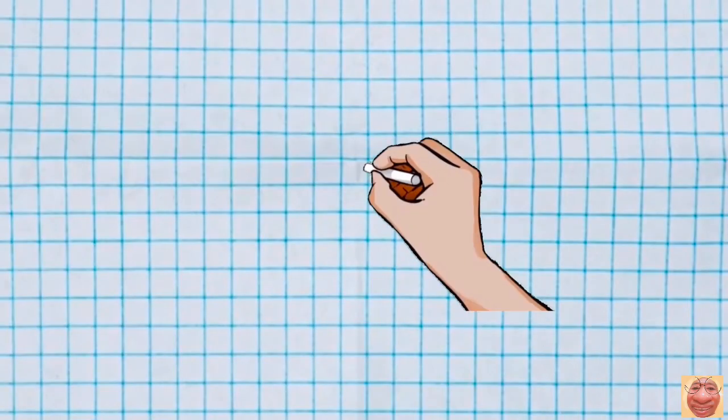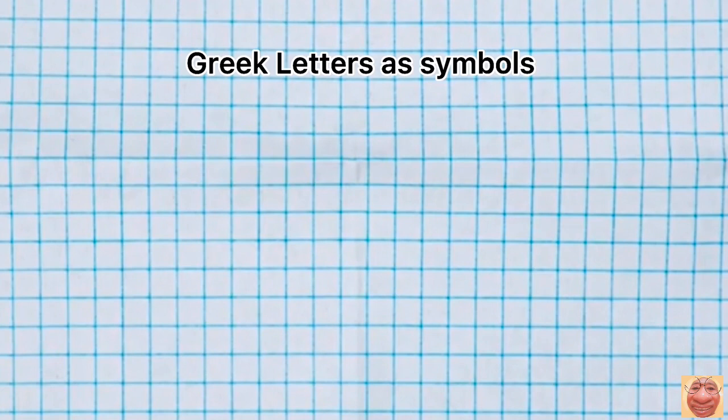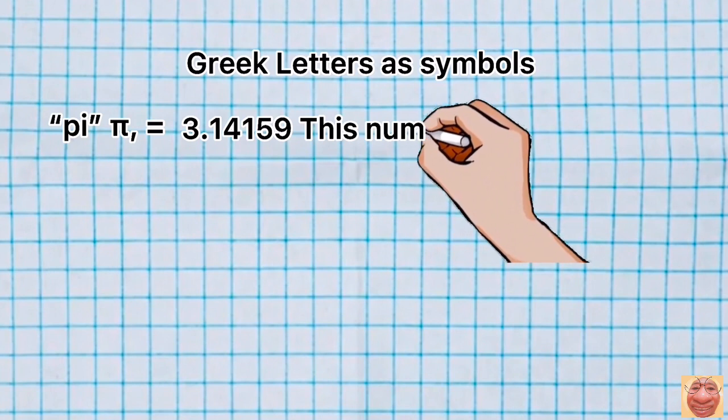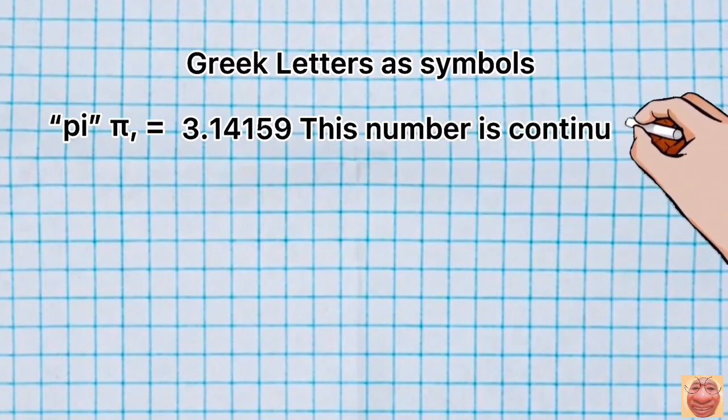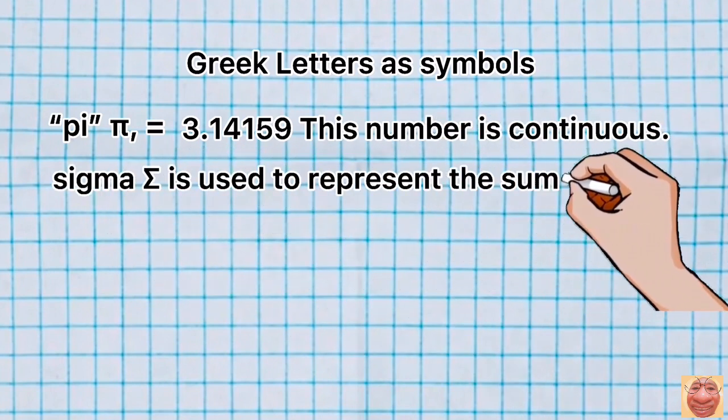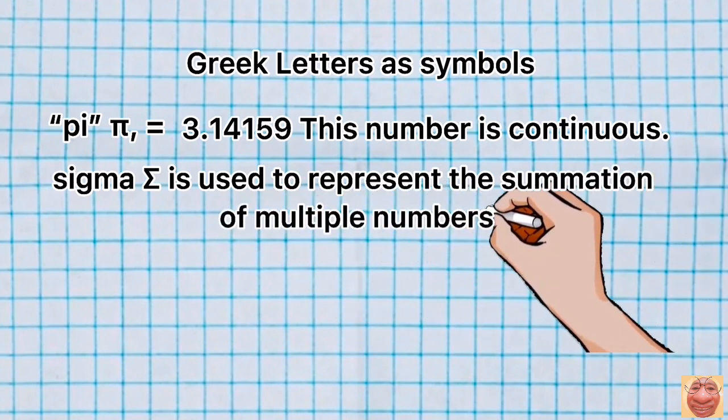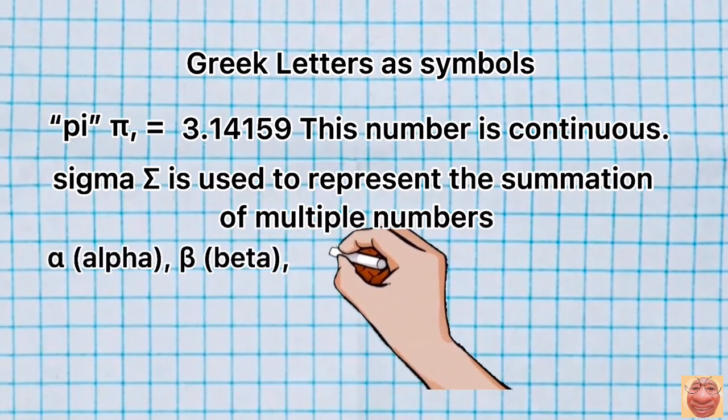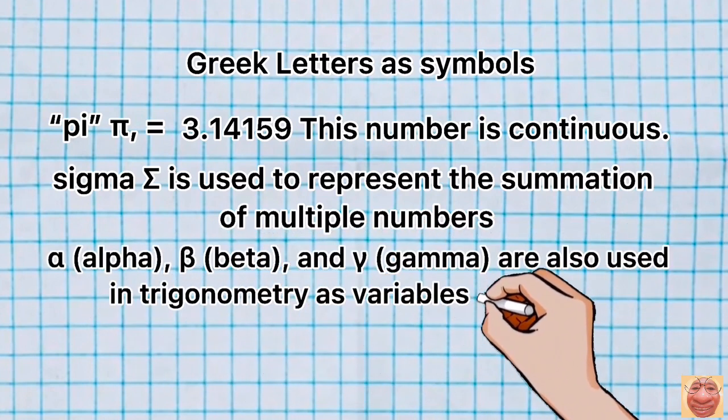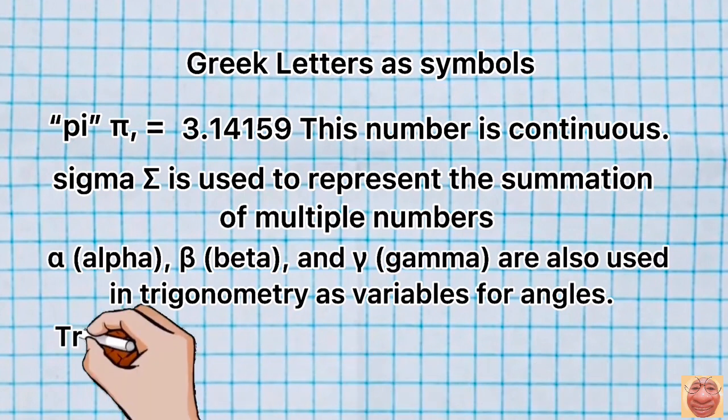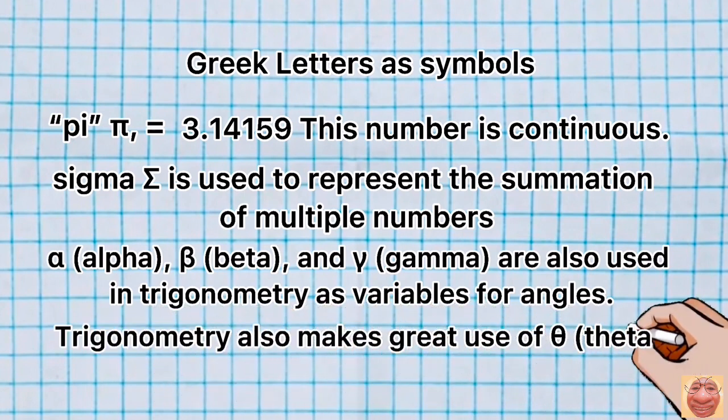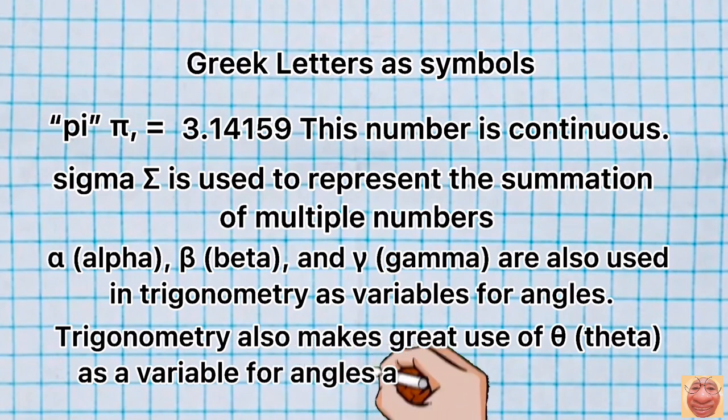In math, Greek letters are also used as symbols too. For example, we are very familiar with the Greek letter pi, which is used to represent the number 3.14159. In statistics, the symbol sigma is used to represent the summation of multiple numbers. The first three letters of the Greek alphabet, the alpha, beta, and gamma are used in trigonometry as variables for angles. Trigonometry also makes great use of theta as a variable for angles and also in statistics.